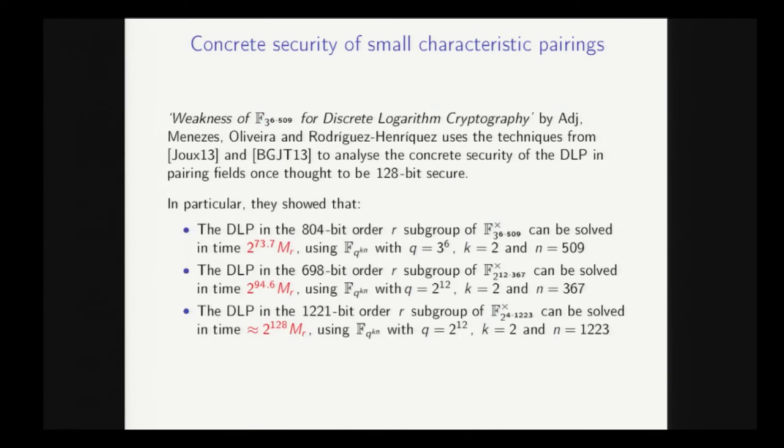So they looked at three fields in this paper. The first one is from the elliptic curve over F3 to the 509, which has embedding degree 6. And what they showed is rather than 128 bits of security, using these techniques, it only has about 74 bits of security. And the unit of cost they use is this MR. So it's a bit of a fuzzy notion of bit security. MR is just the cost of performing one modular multiplication, modulo the subgroup order of the elliptic curve in question.